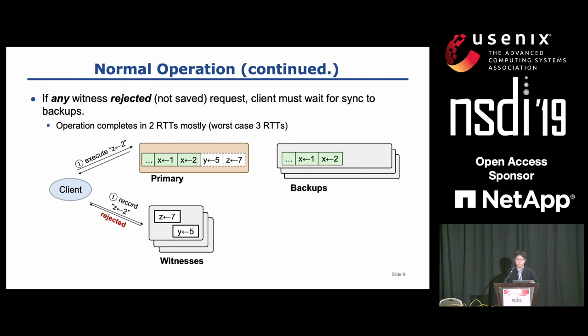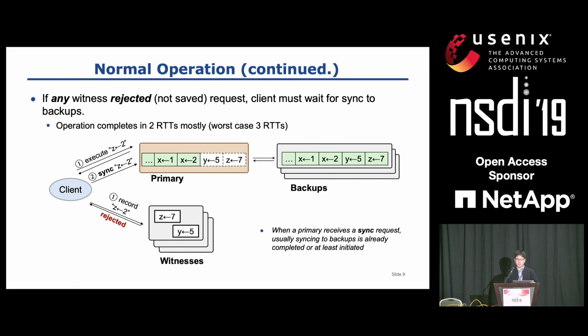If any witness rejects the request, the client cannot complete the operation because it may be lost if the primary crashes. So in that case, the client must wait for the operation to get synced to backups by sending an explicit sync request. When the primary receives the sync request, sync is most likely already completed, so the operation mostly completes in two RTT.